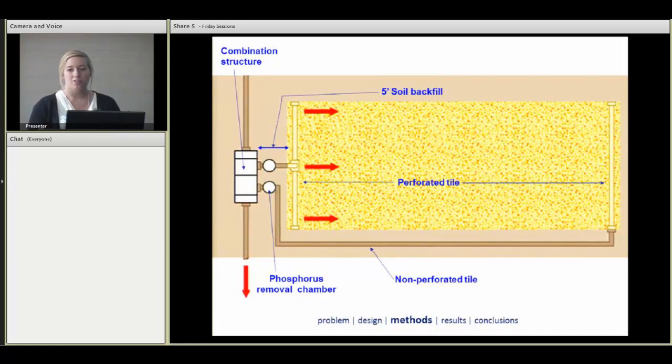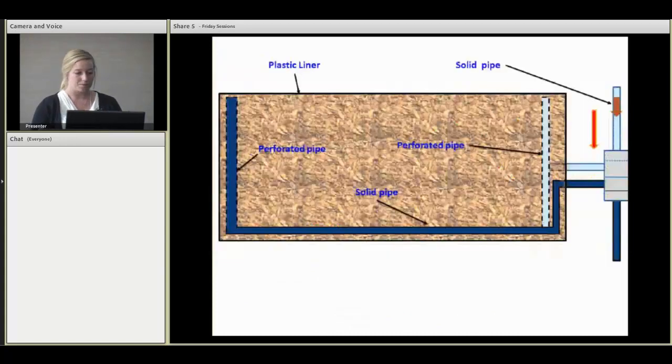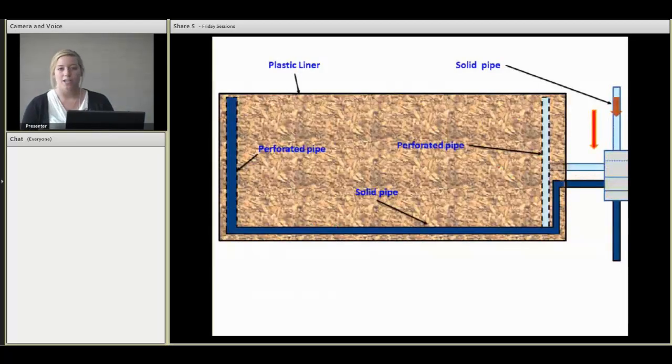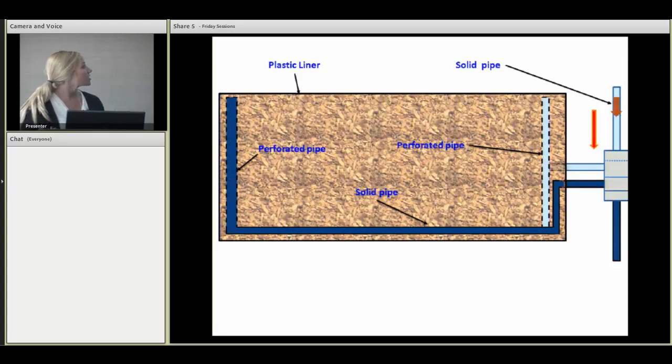We're also looking into the effects of treating for mercury. A lot of times with the bioreactors there's an unintended consequence of mercury methylization. That's also something we would like to look into with our research. Through the bioreactor the water comes in through the red arrows on the side and goes across the structure. Then it goes back across and out the drainage structure.